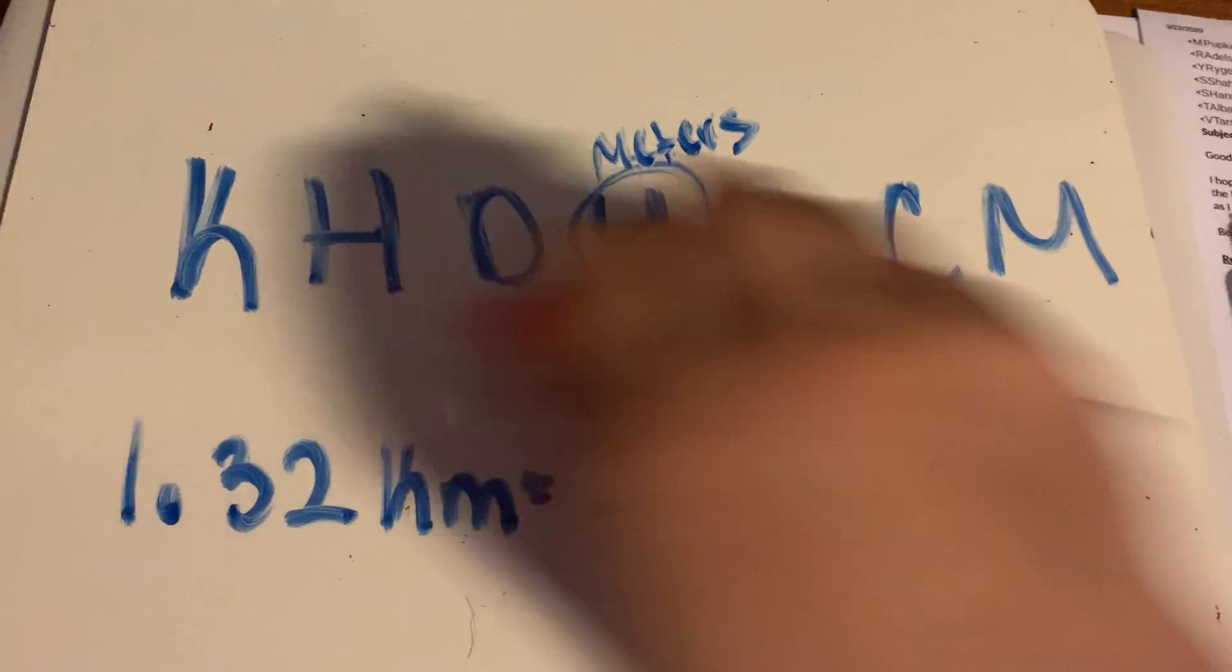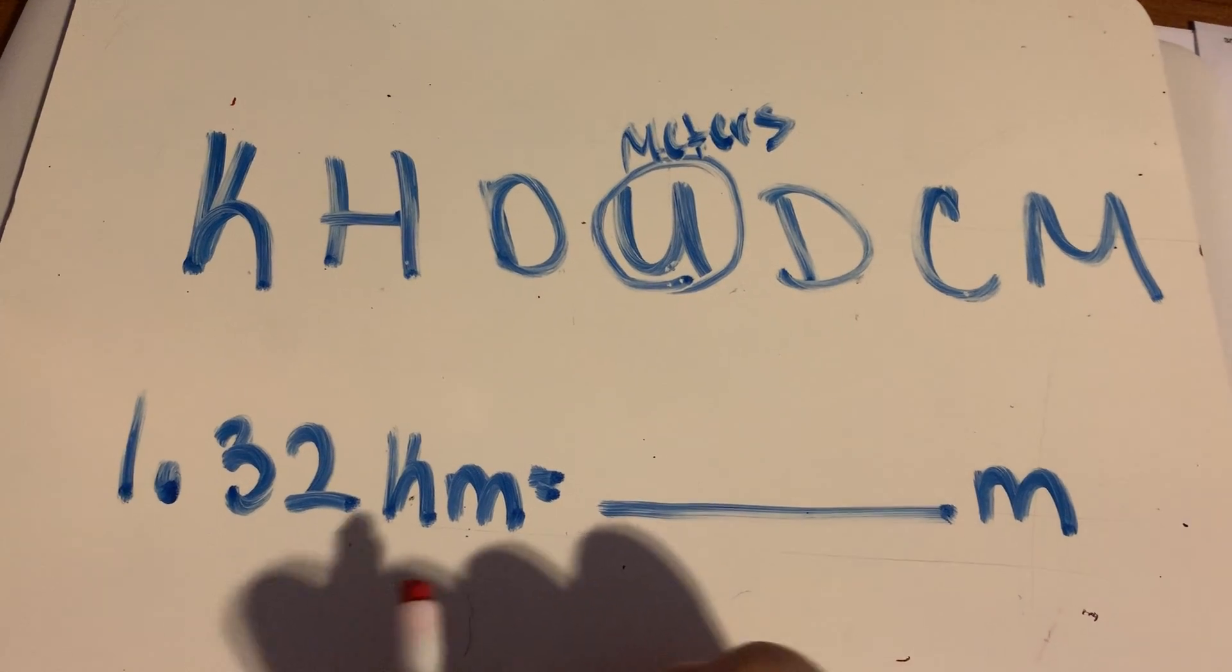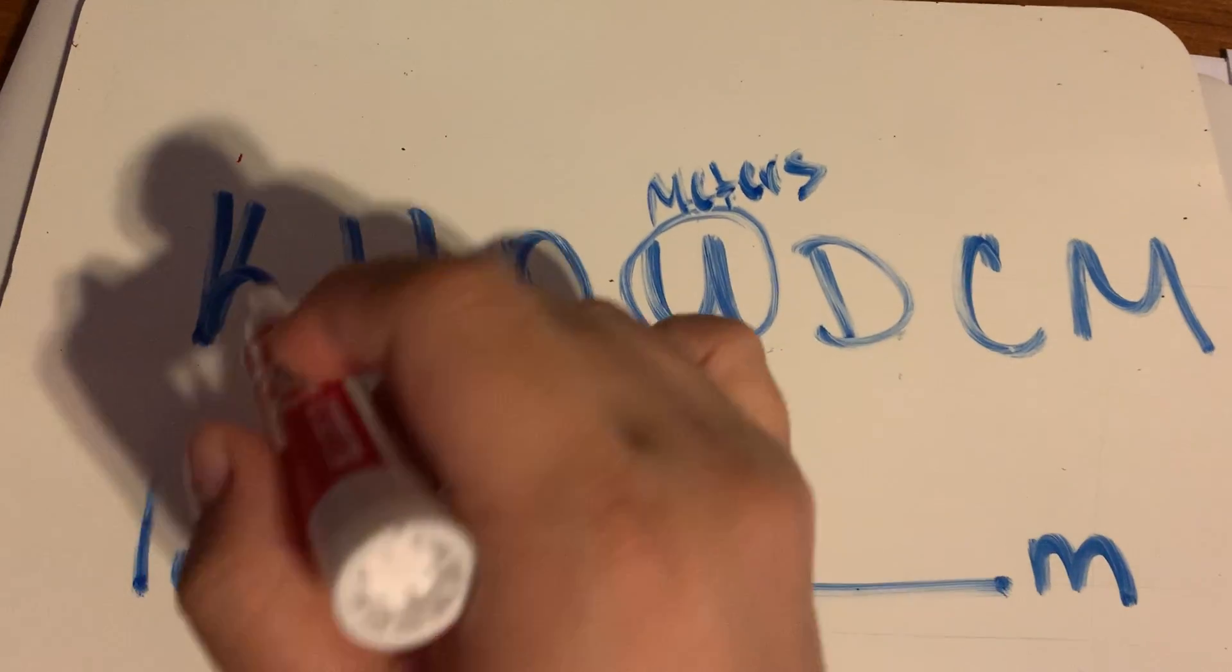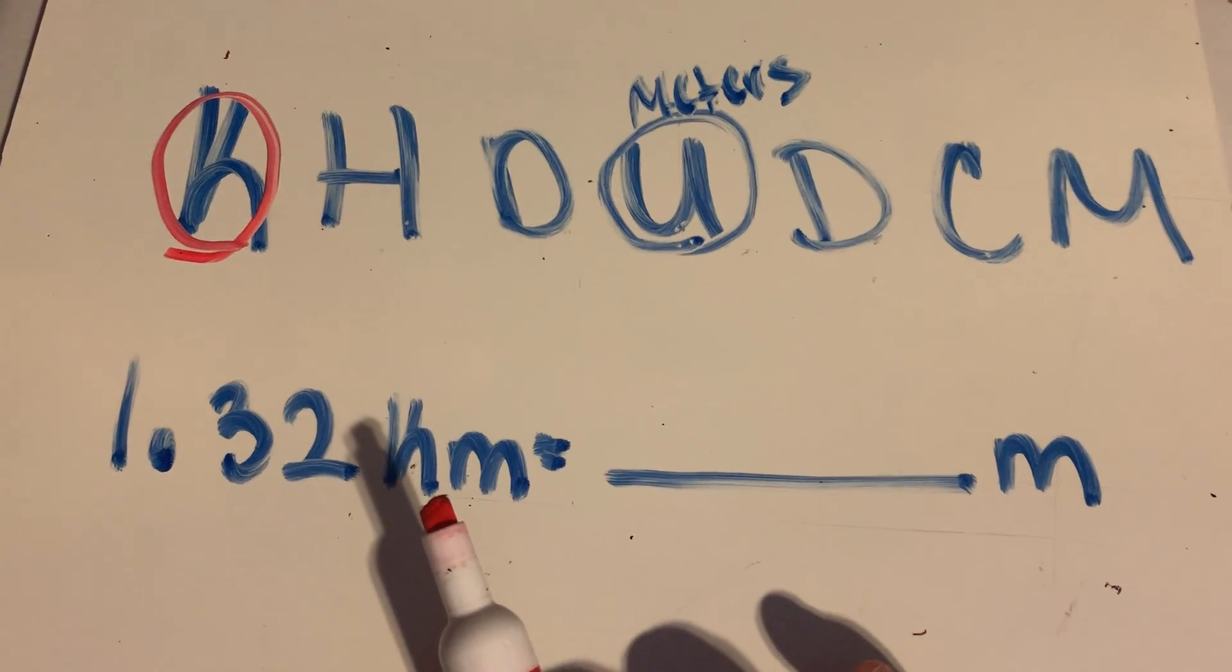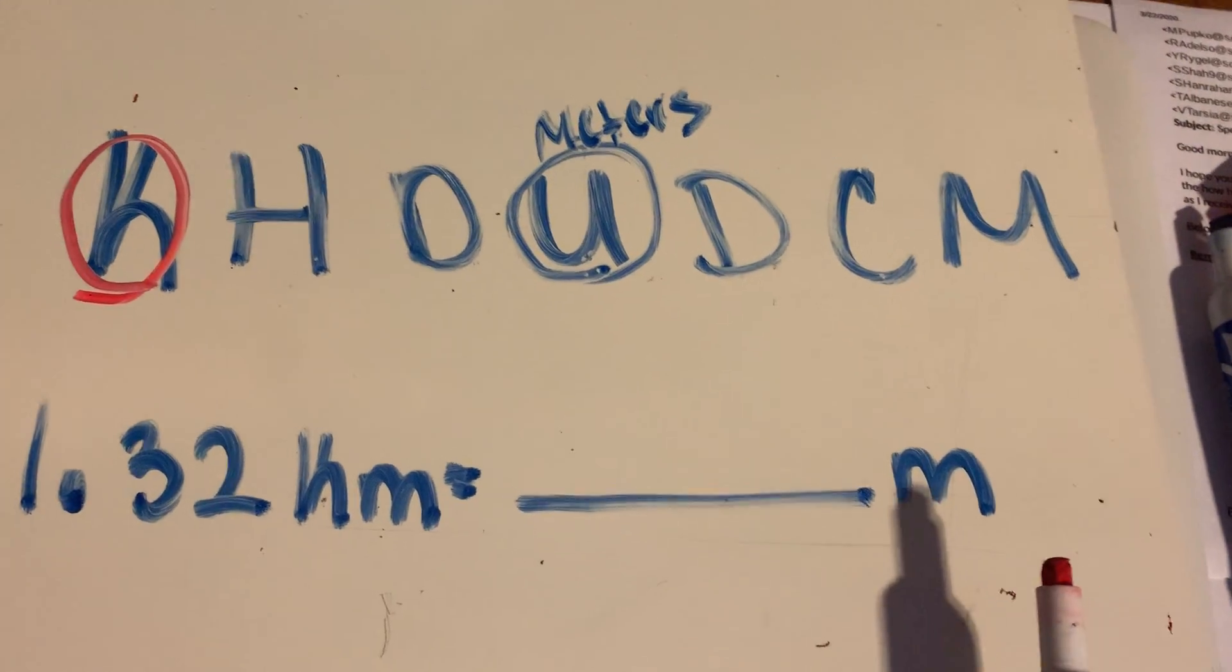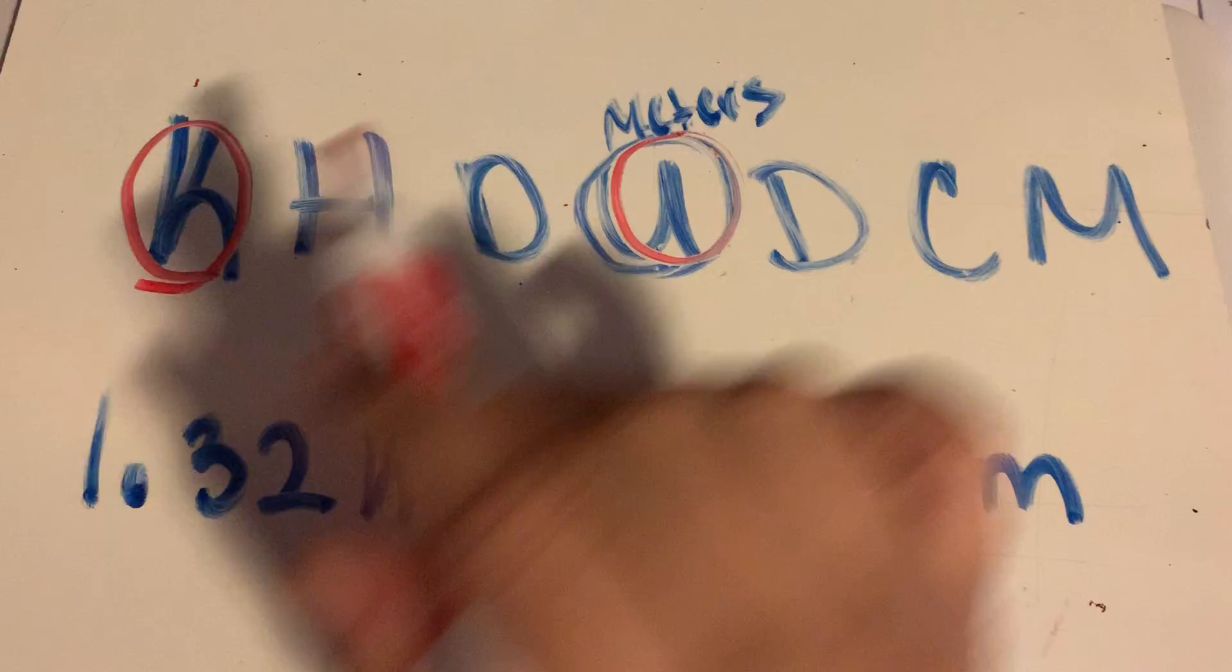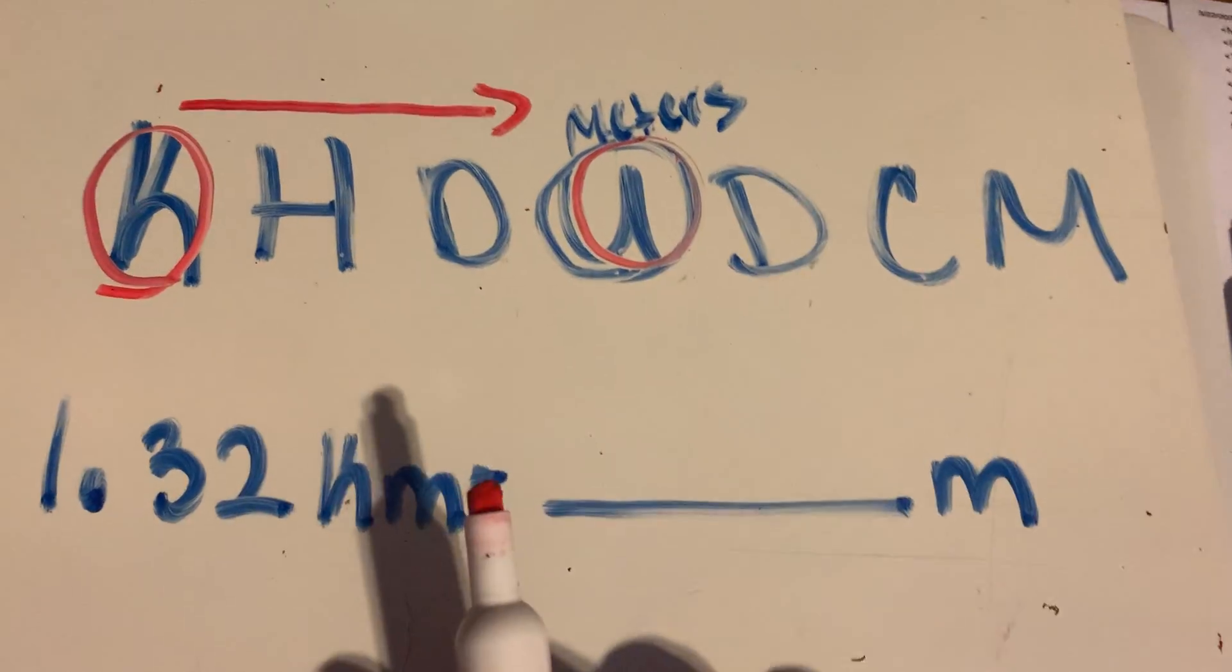So let's take a look at the problem I just gave you. You have 1.32 kilometers, right? So where am I starting? I'm starting at kilometers. So I'm going to circle my K. And where am I going to? I'm going to meters. So where is meters? He's at my U. So this is where I'm going. So which direction am I going to be moving? I'm going to be moving to the right. I'm going that way.